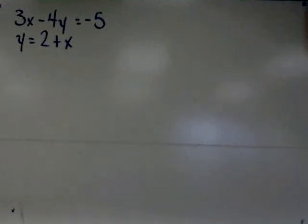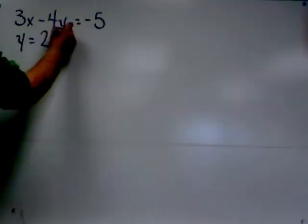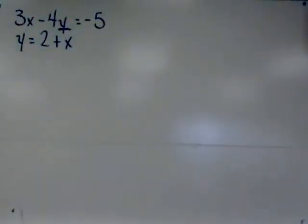Within this system of equations, I'm given the equations 3x minus 4y equals negative 5 and y equals 2 plus x. Based on the second equation, I know that y is the same thing as 2 plus x. So I'm going to go into the first equation and change y into 2 plus x.